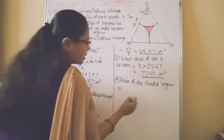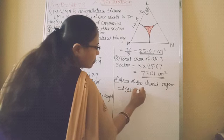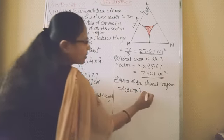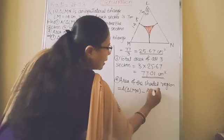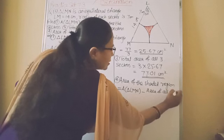So area of the shaded region is equal to area of triangle L, M, N minus area of all 3 sectors.